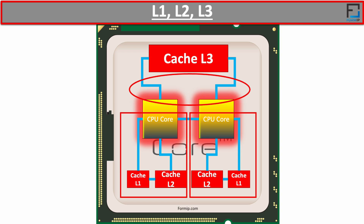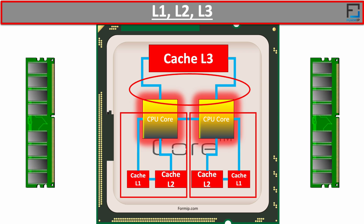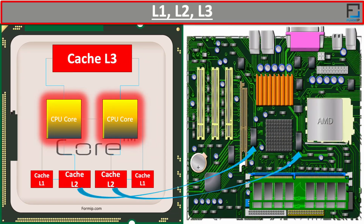If the data is not found in any of the caches, the processor will go down to the RAM — the memory sticks installed on the motherboard. The L2 cache is larger than the L1 cache, but that doesn't mean it's faster. The same goes for the L3 cache, which is larger than both L2 and L1. In all cases, the order of speed is: L1, then L2, then L3. On modern processors, the L2 cache is located directly on the processor. On older processors, the L2 cache was usually placed on a separate chip on the motherboard, independent of the CPU.